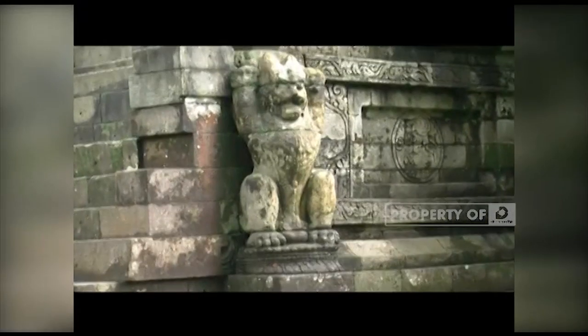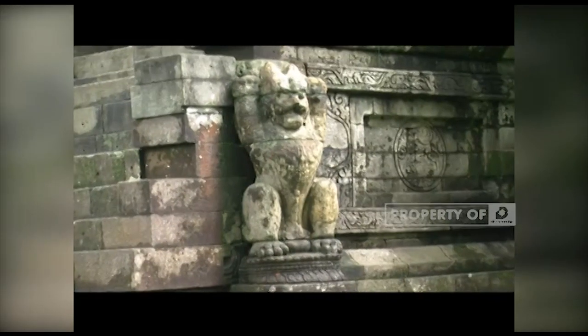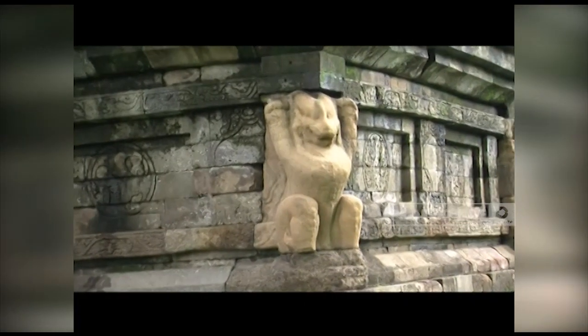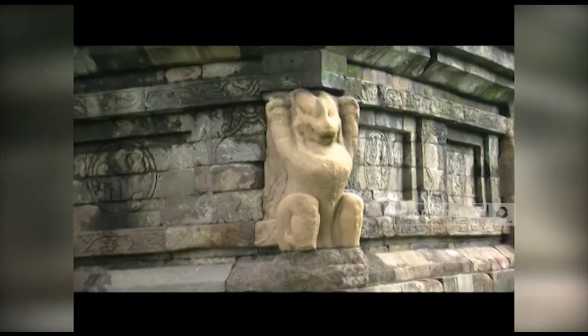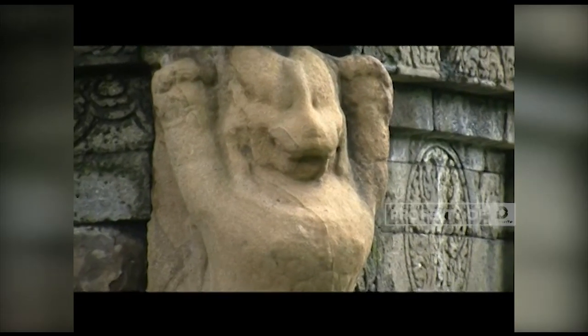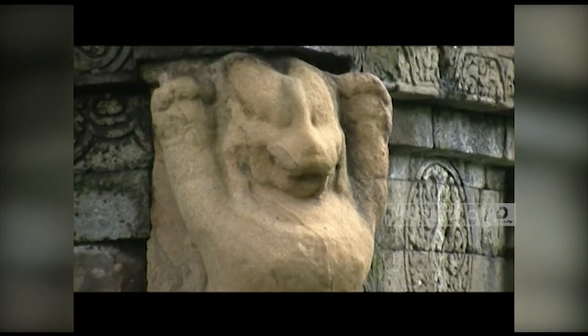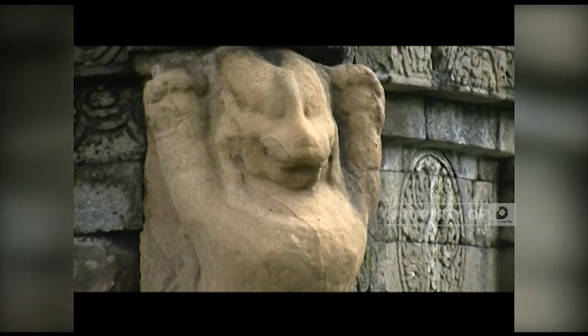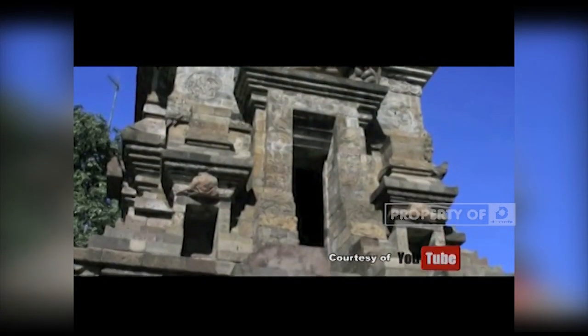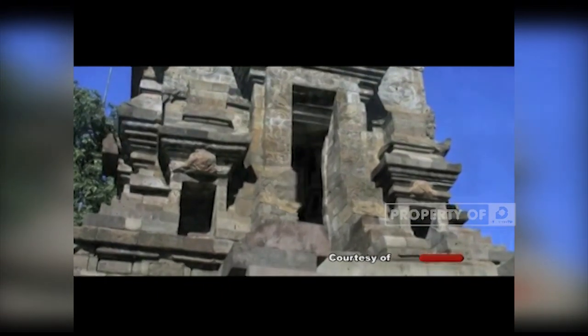Pada dinding candi bagian bawah terdapat pula hiasan tiang dengan bentuk singa yang seolah menyangga pelipit mistar di atasnya, yang disebut singa setambah. Singa setambah merupakan lambang penjaga yang kuat dan tangguh.